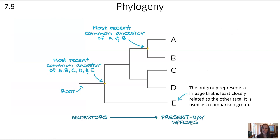So how do you read a phylogenetic tree or a cladogram? The ancestors are at the root side of things, usually shown on the left or the bottom. The present-day species are shown as the tips of the branches — in this case, A, B, C, D, and E.